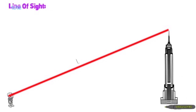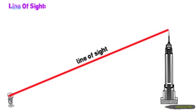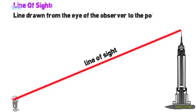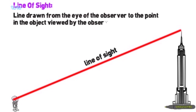That imaginary line is called line of sight. The line drawn from the eye of the observer to the point in the object viewed by the observer is called line of sight.